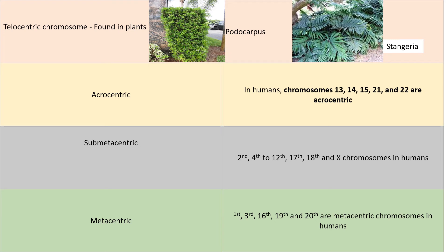In humans, chromosomes are either acrocentric, submetacentric, or metacentric. We have 23 pairs of chromosomes, and if we classify them by centromere position: chromosomes 13, 14, 15, 21, and 22 are acrocentric.